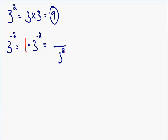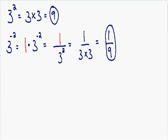Everything else stays the same. The 1, which is in the numerator, stays in the numerator. So now we don't have any more negative exponents. We have 1 over 3 squared, which is 1 over 3 multiplied by itself 2 times, equal to 1 over 3 times 3, which is 9. So 3 with a negative 2 exponent is equal to 1 over 9.